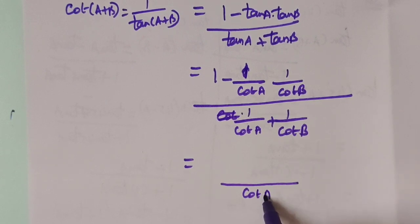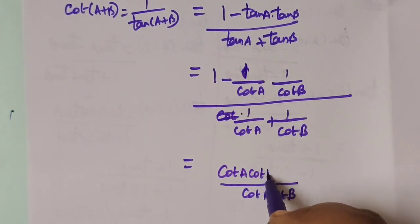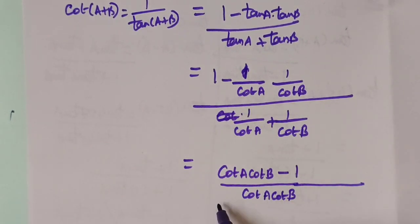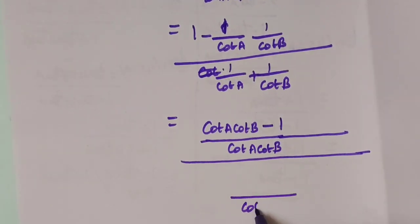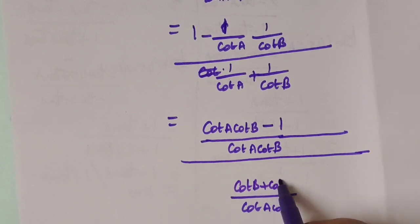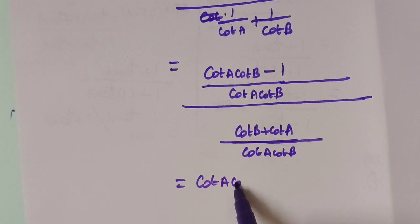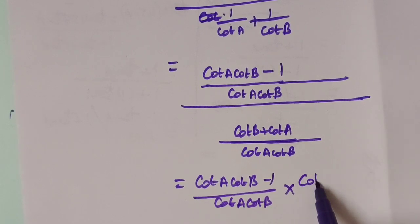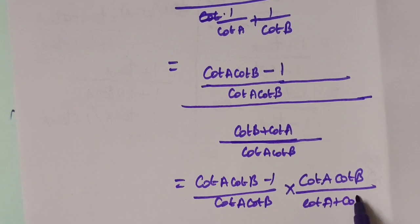Taking LCM of the group, we get (cot a · cot b - 1) in the numerator. Cross multiplying, the denominator becomes (cot b + cot a). So we get (cot a · cot b - 1) / (cot a + cot b). Taking the reciprocal gives cot a · cot b / (cot a + cot b).